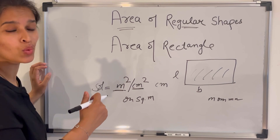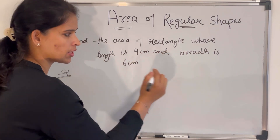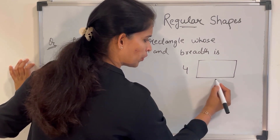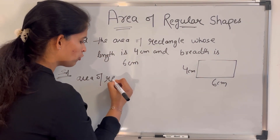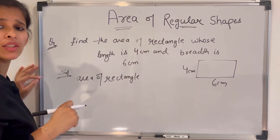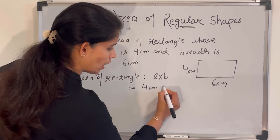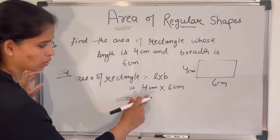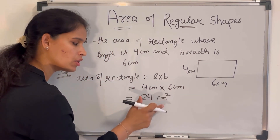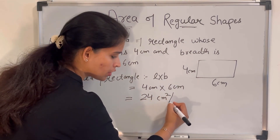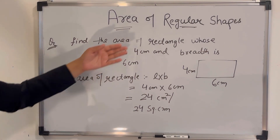Let us take one example to understand how to solve the area of a rectangle. Find the area of a rectangle whose length is 4 centimeters and breadth is 6 centimeters. The formula for area of rectangle is length multiplied by breadth — that is 4 cm × 6 cm = 24 centimeter square.